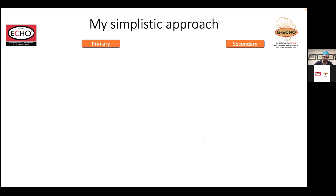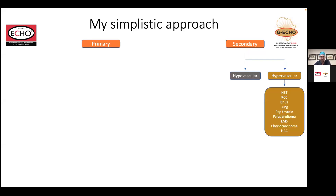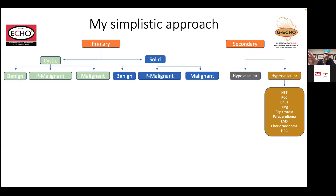I start by breaking these into primary and secondary lesions. For secondary lesions, we rely heavily on cross-sectional imaging, subdividing them into hypovascular or hypervascular lesions depending on contrast dynamics. For primary lesions, I break them up into cystic and solid lesions, and within each, subdivide into three components: benign, pre-malignant, and malignant.